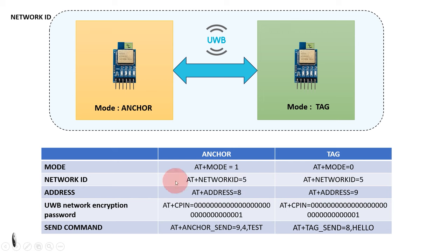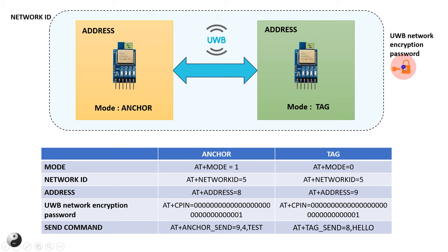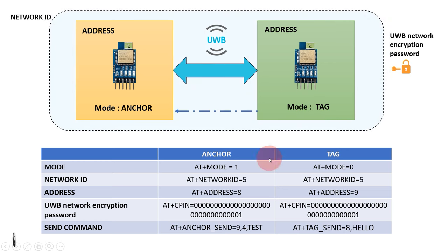Use the AT+ADDRESS command to set unique addresses for both anchor and tag. In a given network, different addresses are assigned to anchor and tag, but the network ID will be similar for all devices in that network. Then use AT+CPIN to set the UWB network encryption password — only modules with the same encryption password will be able to decode the data correctly. After these four main configurations — mode, address, network ID, and password — the last step is sending and receiving data between the two modules. To transmit data to the anchor from the tag, use the AT+TAGSEND command. To transmit data from anchor to tag and obtain the distance, use the AT+ANCHORSEND command.